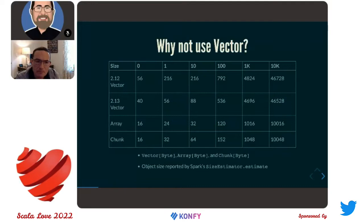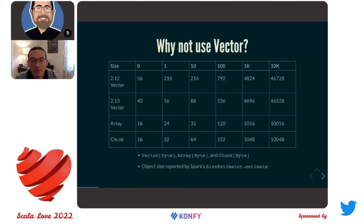But also notice that arrays just kick everybody's butt. Some of this is because of primitive arrays — if we allocate an array of bytes, we're always going to be a quarter of the size compared to a vector of bytes. We need that primitive packing, that specialization. Chunk's heap size is fairly competitive with the array — it ends up being just a small constant factor on top of the size of a densely packed primitive array. That was really important because we move bytes around a lot.